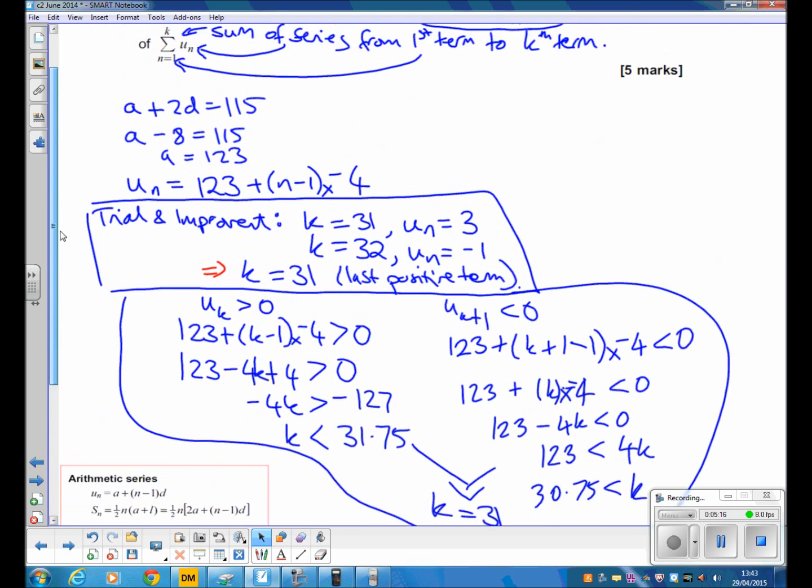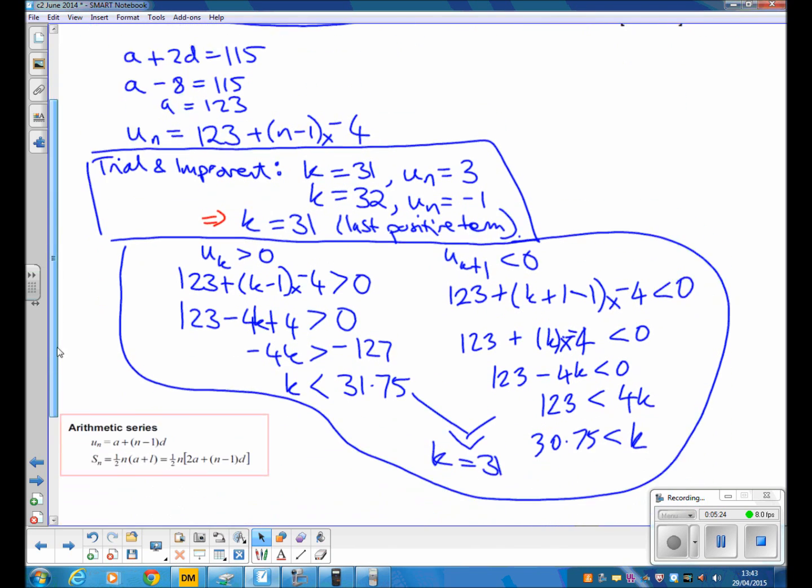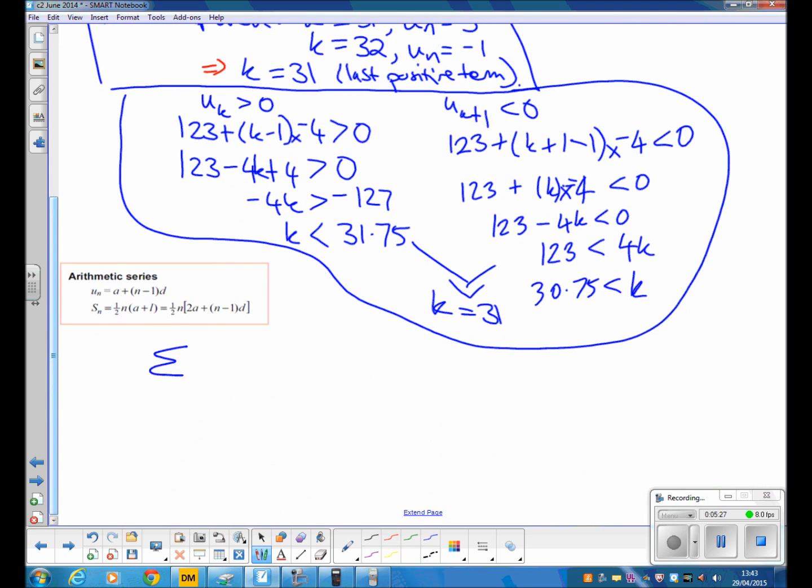Once we've done that, we can apply it to the question. So the question wanted us to do the sum from n equals 1 to k of the series. So we want the sum from n equals 1 to 31 of our series. Well, that's just the case now of using the summing up formula. We could use either form, but the one you'll probably use is a half n times 2a plus n minus 1 times d.